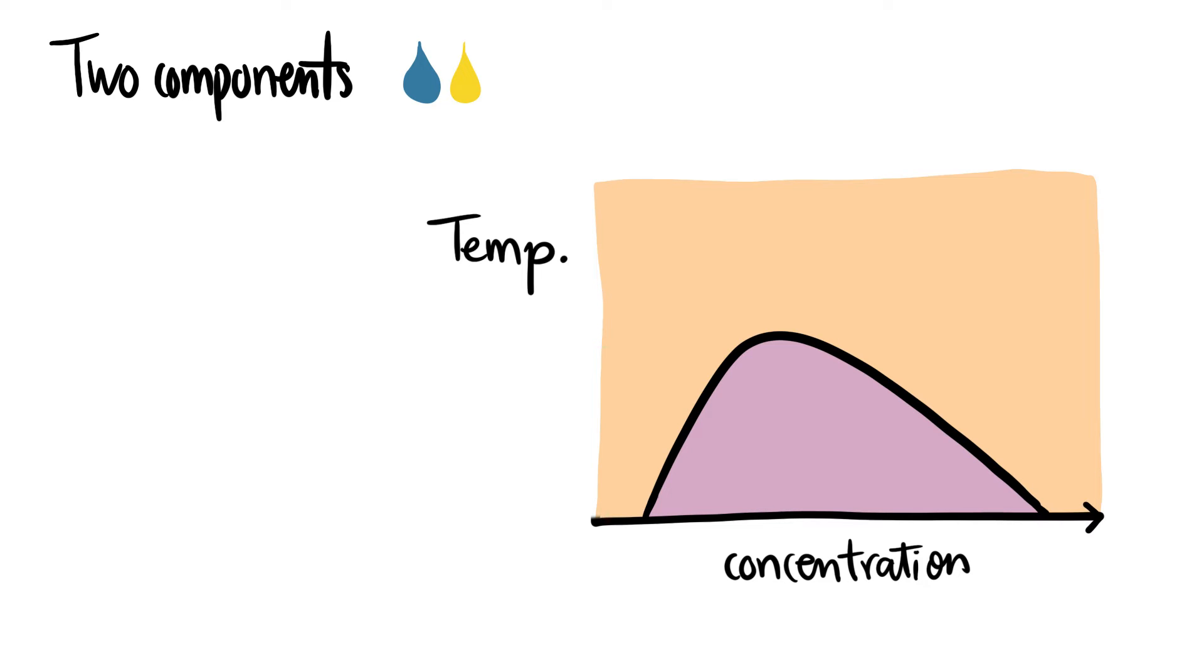The horizontal axis represents the average concentration of one component. The vertical represents an external parameter, such as the temperature, that controls the state of the system. This curve is called the binodal and shows the separation between the two possible states of the system, mixed and demixed.